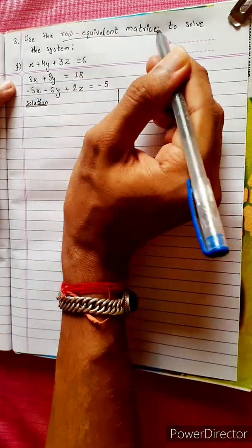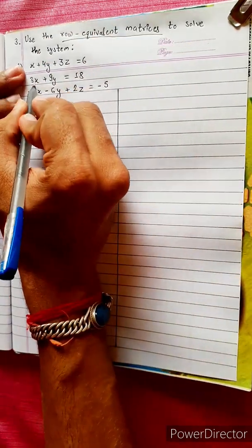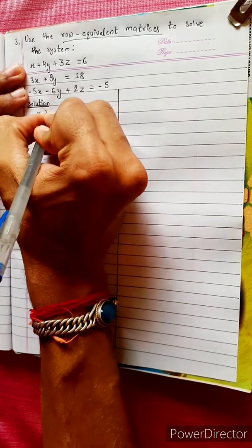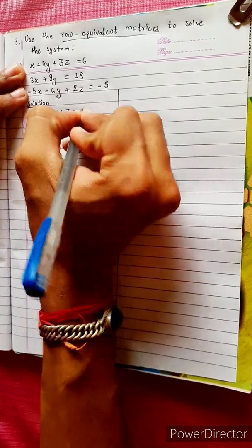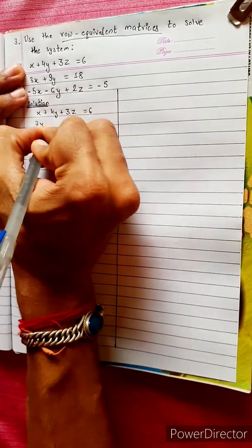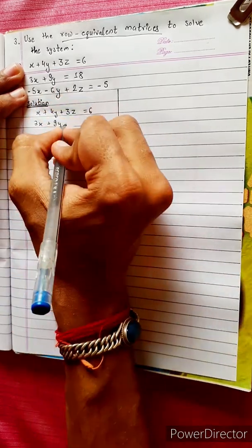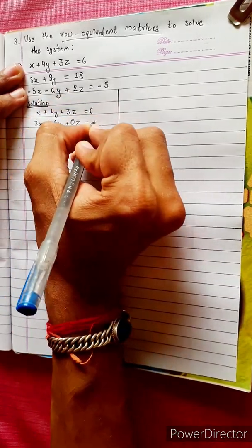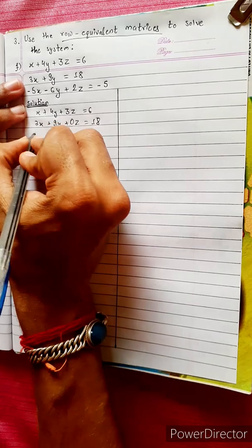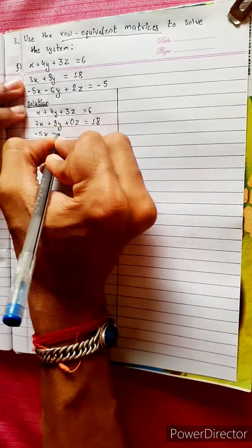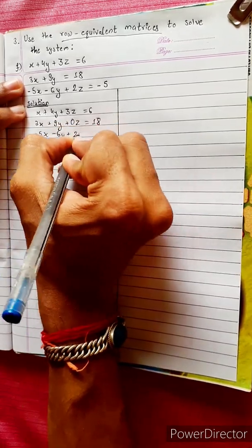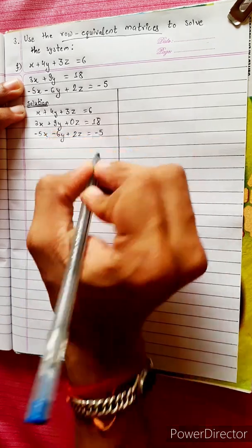Use the row equivalent matrices to solve the system. The system is: x plus 4y plus 3z equals 6, 3x plus 9y plus 0z equals 18, and minus 5x minus 6y plus 2z equals minus 5.